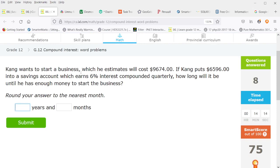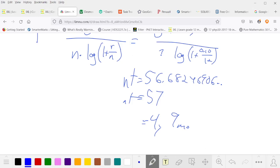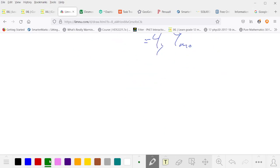Kang wants to start a business. Perhaps he wants to invade our dimension coming from dimension X. Oh, what am I saying? That was Krang. Kang would be more about time travel. Anyway, Kang wants to start a business, which he estimates will cost $9,674. If Kang puts $6,596 into a savings account which earns 6% interest compounded quarterly, how long will it be until he has enough money to start the business? And here we go. We can reuse our algebra. So because we did it algebraically earlier on this same assignment, we can jump to the number of interest periods which is the log of the amount over the principal over the log of 1 plus the rate over N.